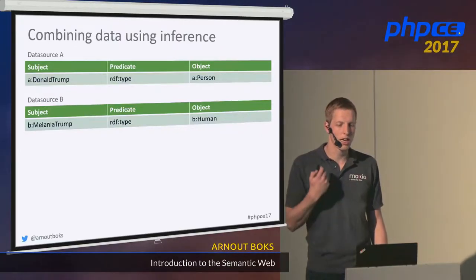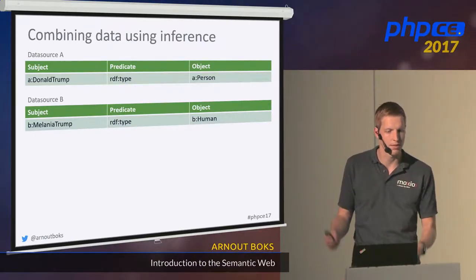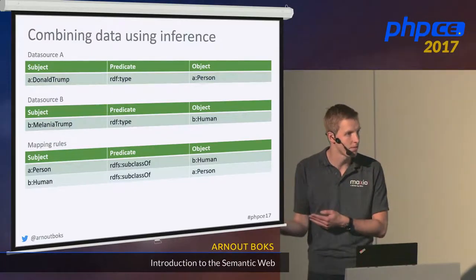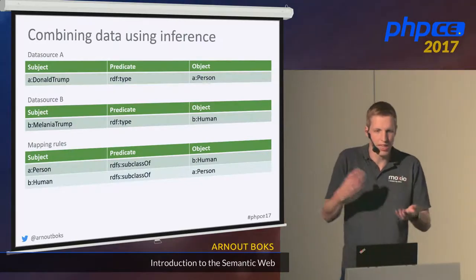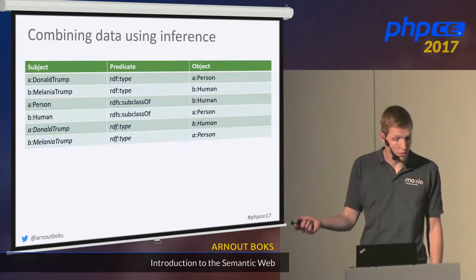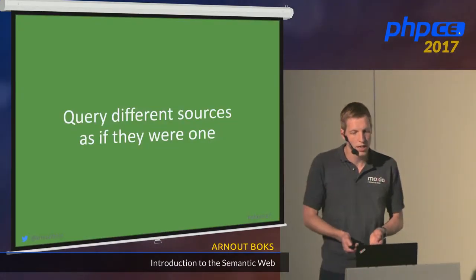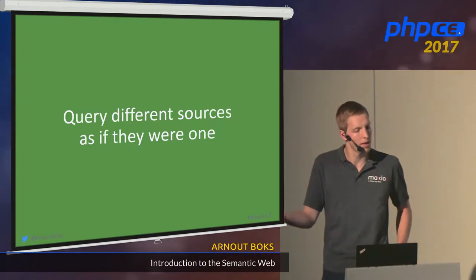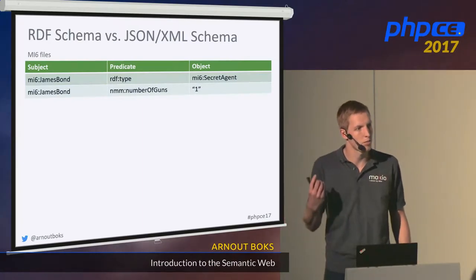This inference also allows us to combine data easily. Suppose we have two datasets from different sources using different terminology: one says Donald Trump is a Person, another says Melania Trump is a Human. If we want to merge this data, it doesn't align well — because a Person should also be a Human. What we can do is add mapping rules using RDFS: we say Person is a subclass of Human, and Human is a subclass of Person. Then when we merge and apply a reasoner, we get back that Donald Trump is also a Human, and Melania Trump is also a Person. This allows us to query different sources as if they were one, as long as we have appropriate mapping rules.